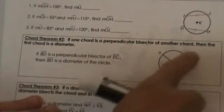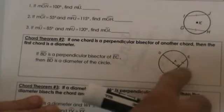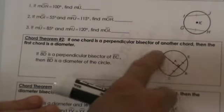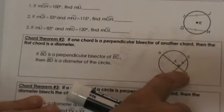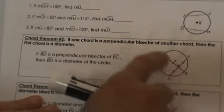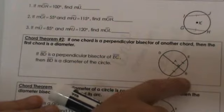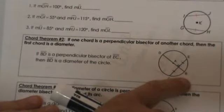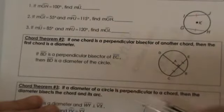So if you have a chord and it's cut in half and it's perpendicular then that means this other chord is a diameter. Now notice the diameter is not bisected. Only the other chord.